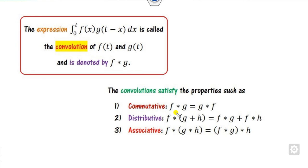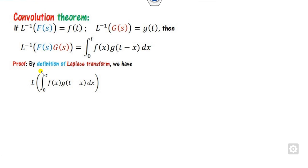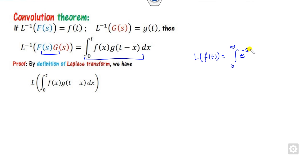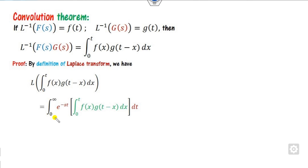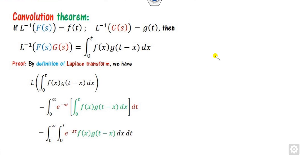To prove this, we apply the Laplace transform to the convolution integral f★g. Recall the definition: the Laplace transform is the integral from 0 to infinity of e^(−st)·f(t) dt. Substituting the convolution expression into this definition, we get a double integral involving e^(−st)·f(x)·g(t−x).